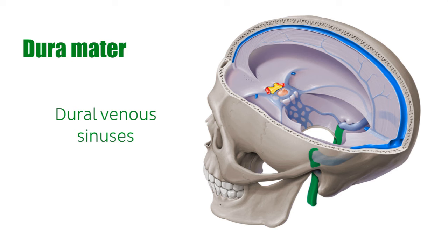You may remember these from our tutorial on the sigmoid sinus. These sinuses allow venous blood to drain into the internal jugular vein, which you can see here in green, towards the heart. Arachnoid granulations, outgrowths of the underlying arachnoid mater through the dura mater, can be found within the dural venous sinuses.